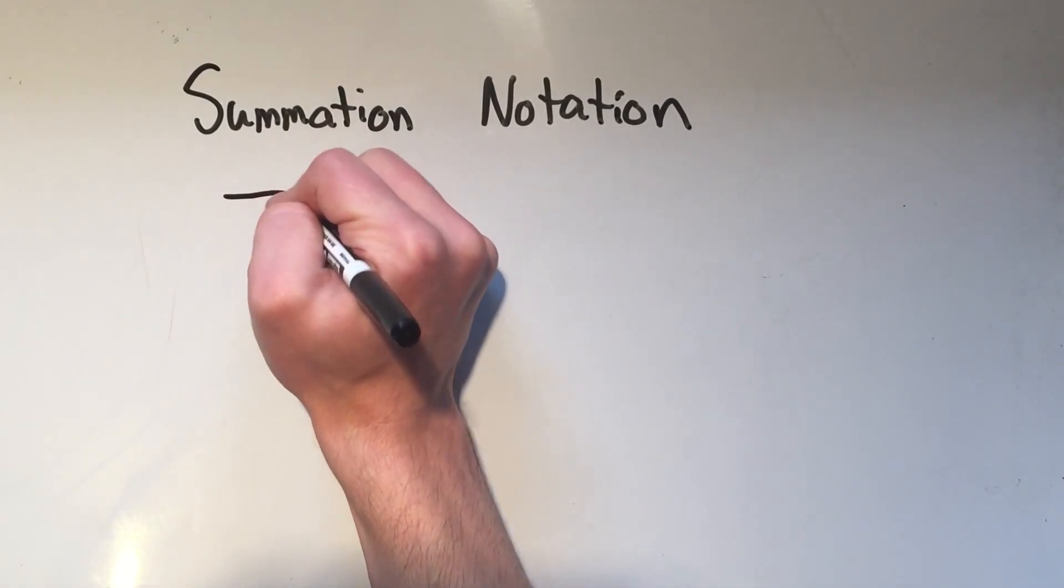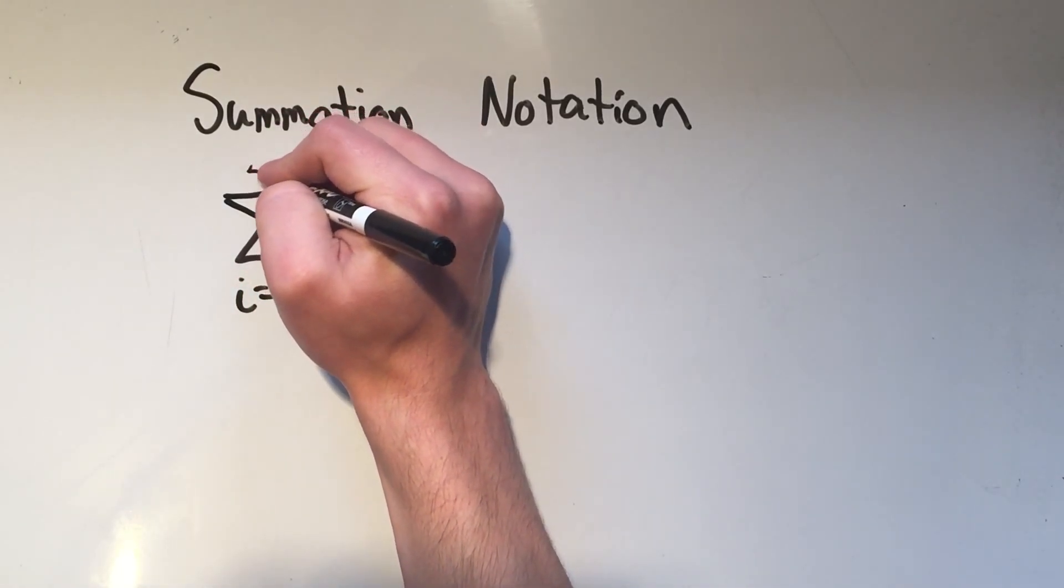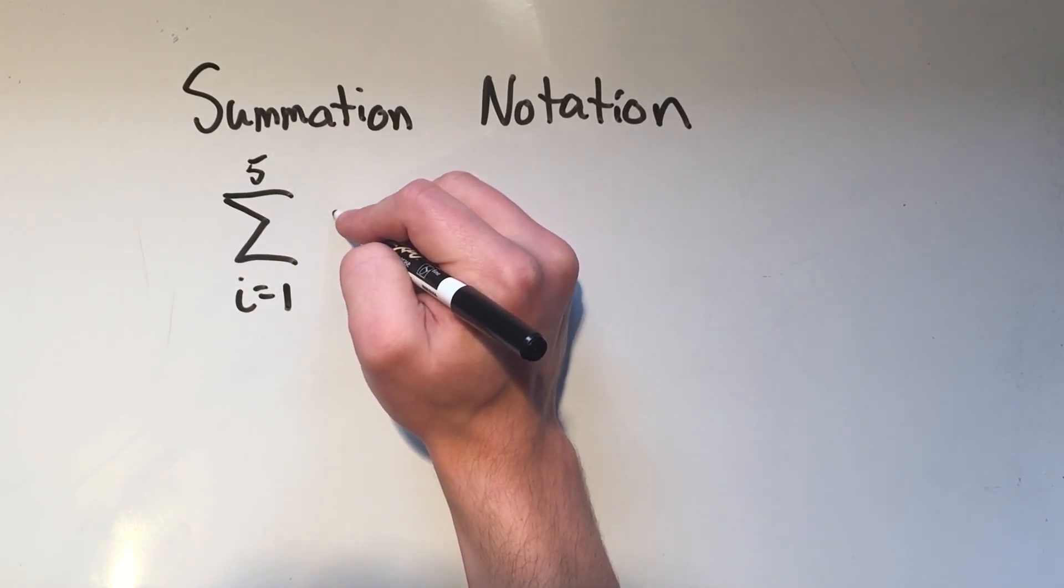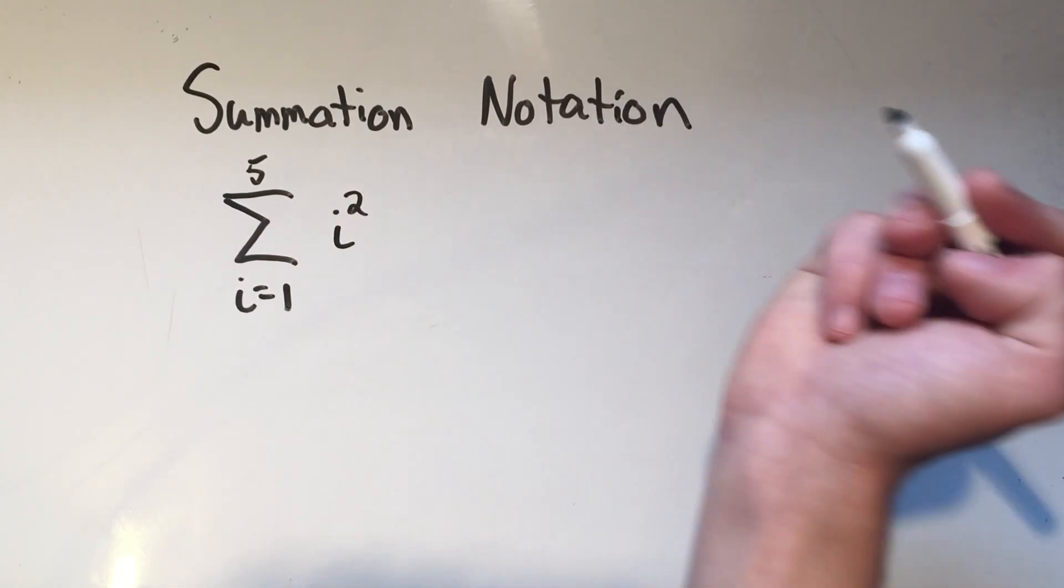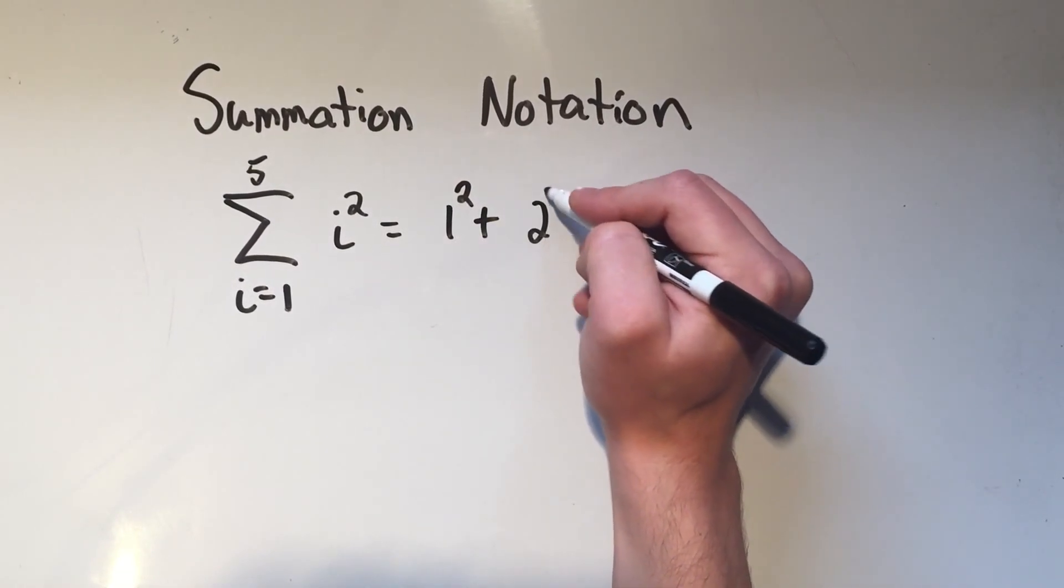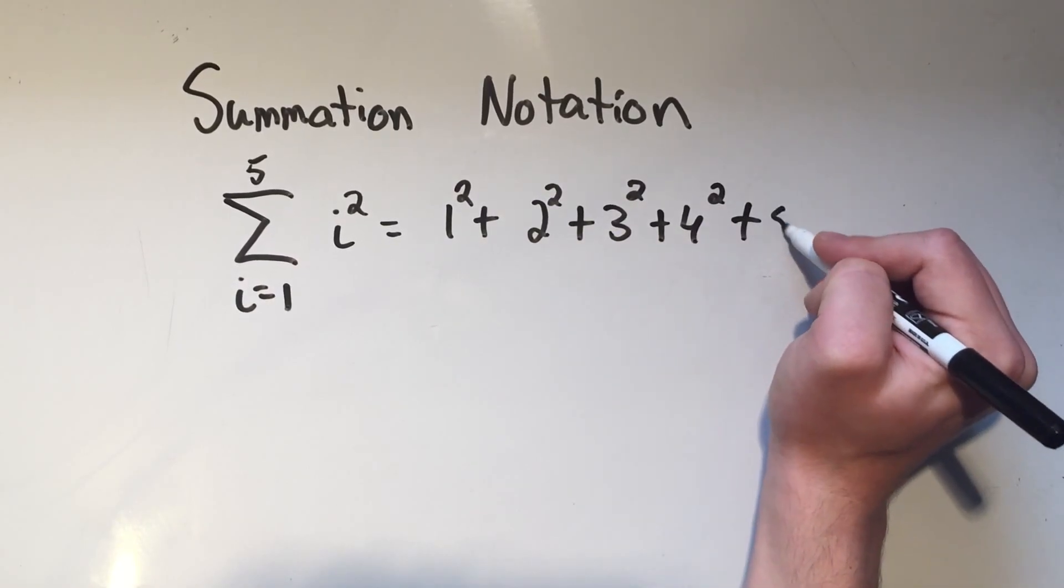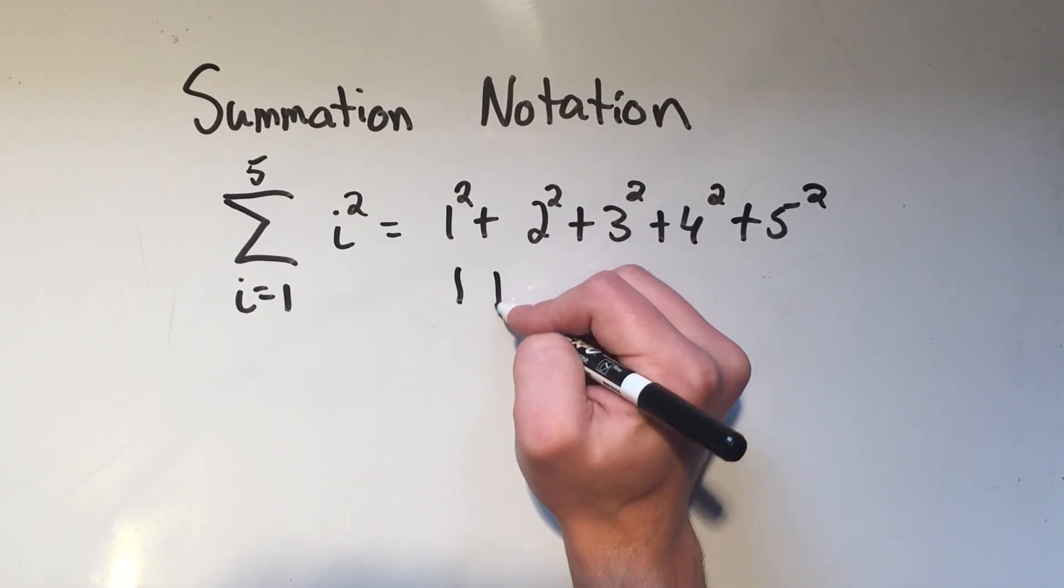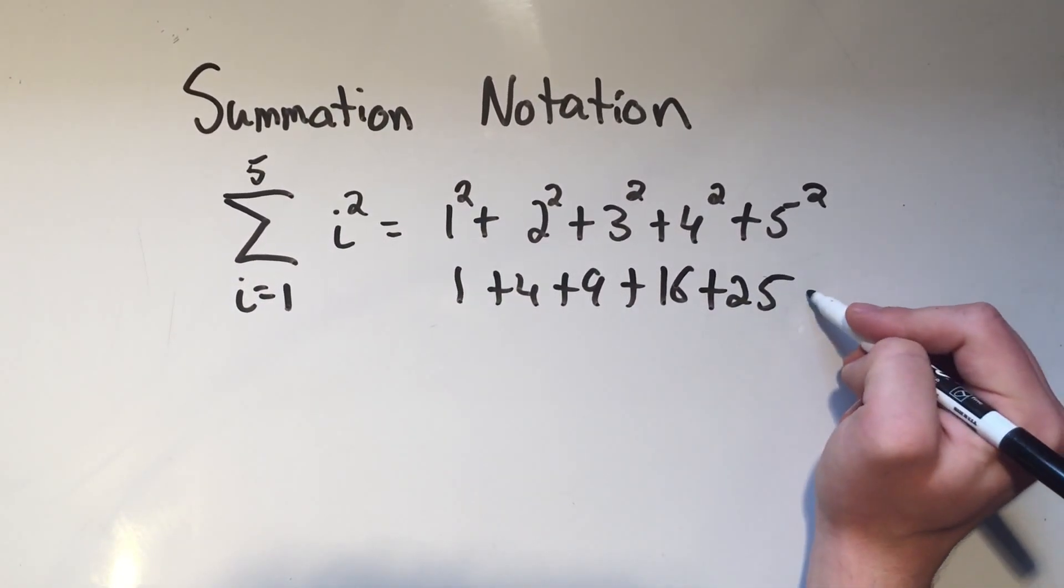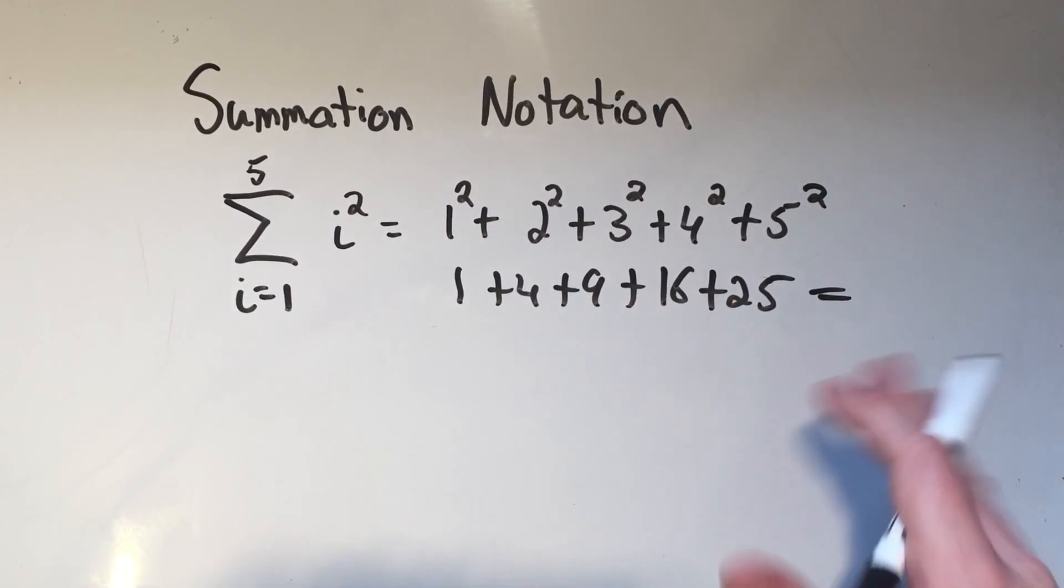If I wanted to sum up i equals 1 to 5 of, this time I'm going to do i squared. That would be 1 squared plus 2 squared plus 3 squared plus 4 squared plus 5 squared, which is 1 plus 4 plus 9 plus 16 plus 25 equals, I'm not even going to do it, but you could plug that into a calculator, or you could work that out by hand if you really wanted to.